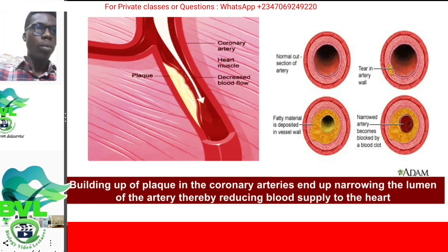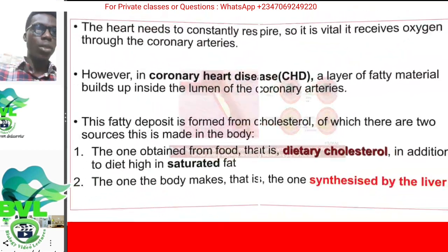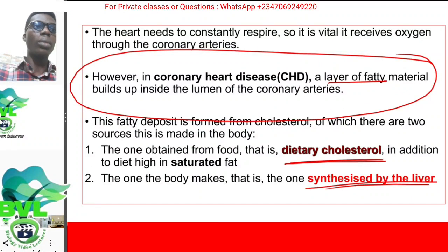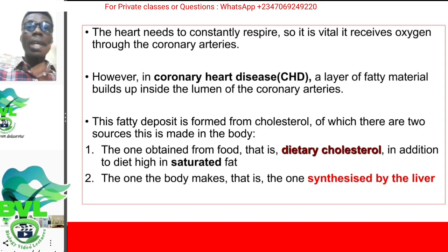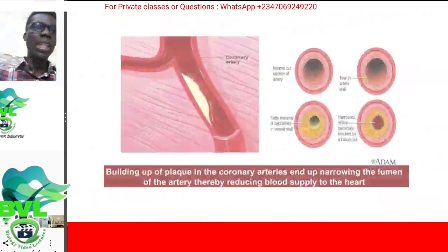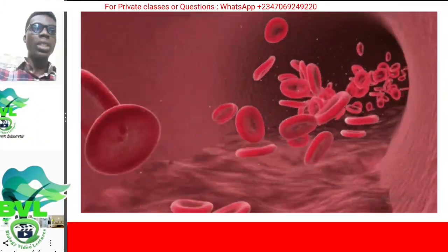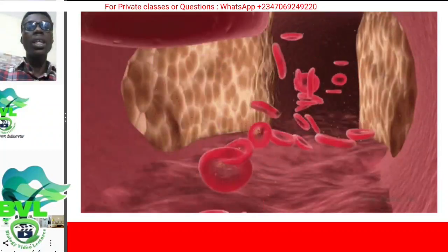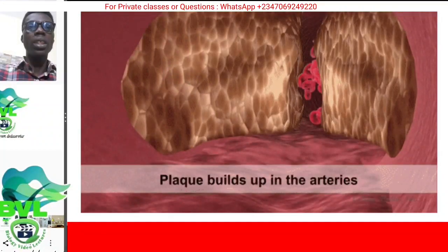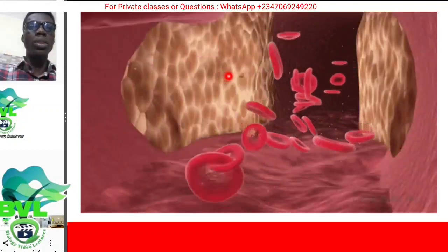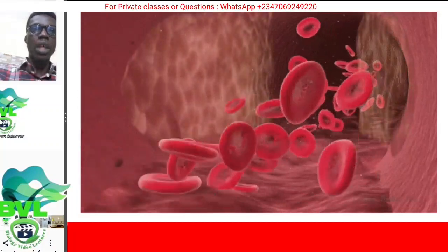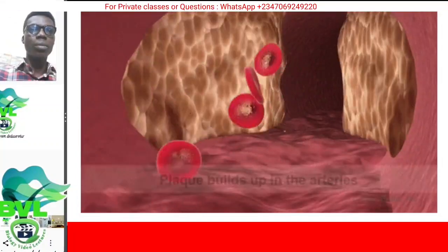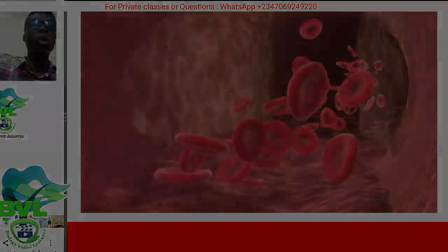Please don't forget something very important: the cholesterol that is dietary, which means from what you eat, is why you might need to watch what you eat. So this is how blood should flow normally — but see what happens: the deposit builds up, then the blood space reduces so greatly. That's the basis of coronary heart disease.